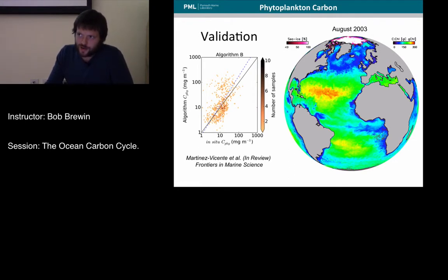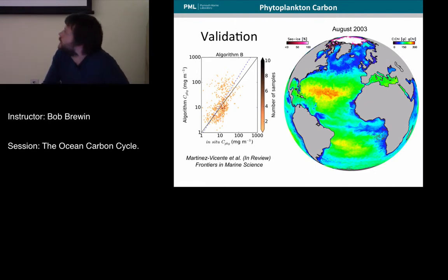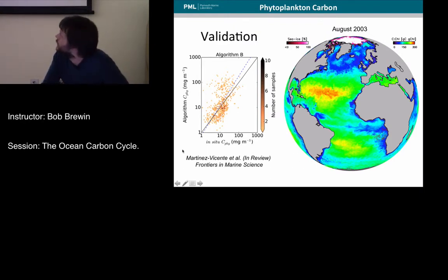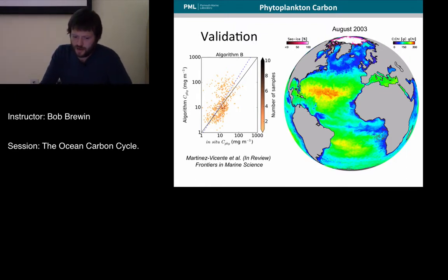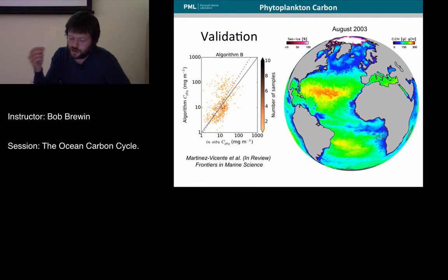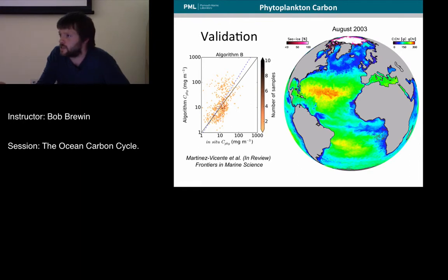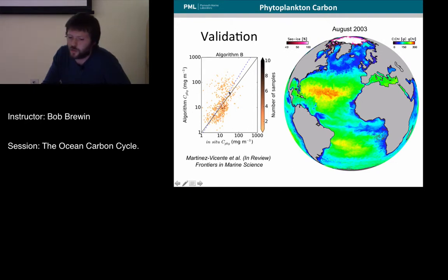There's been a lot of effort in the POCO project funded by the European Space Agency to validate these phytoplankton carbon estimates. The tricky thing is that phytoplankton carbon is actually very difficult to measure in situ, let alone from satellite. There are ongoing efforts to improve in-situ estimates of phytoplankton carbon. A recent paper in review by Victor Martinez-Vicente uses flow cytometry data, converting counts from flow cytometry into carbon to estimate phytoplankton carbon and compare with satellite estimates.